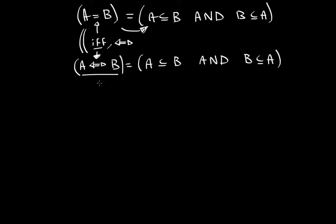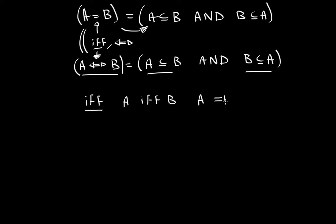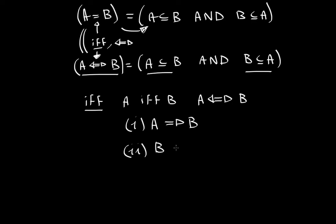Now that you understand this, you also probably understand that this seems to have two portions. If you want to prove if-and-only-if, A if-and-only-if B is the same as A with the double-sided arrow with B.